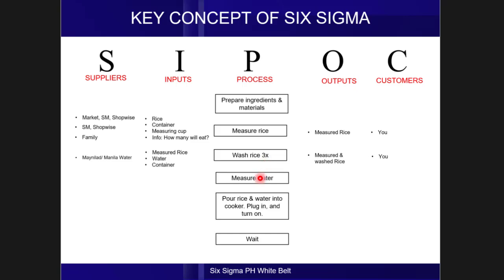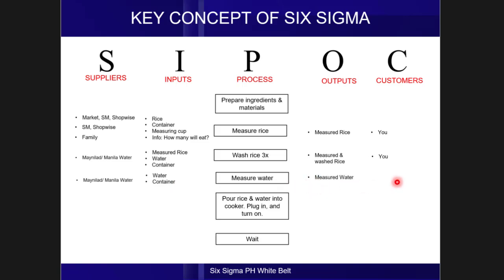We go down to the next step, which is measure water. The inputs needed are water and a container, with the same suppliers as before. The output of the measure water step is measured water, and the recipient or customer of the measured water is still you.